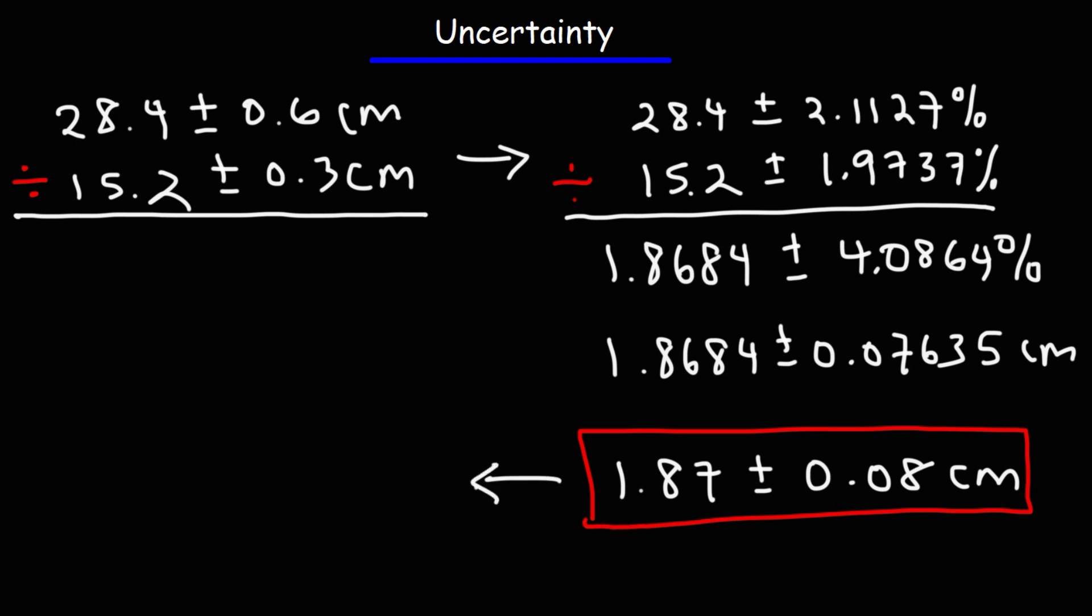So what this means is that the true answer is somewhere between these two values. If we take 1.87 and subtract it by 0.08, on the low side, this could be 1.79. On the high side, if we add 0.08, it could be 1.95. So the true answer is somewhere between those two extremes.